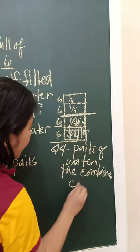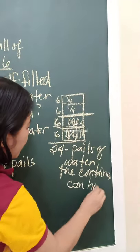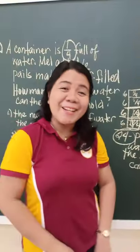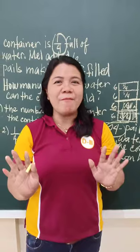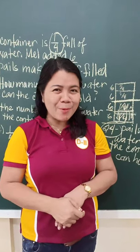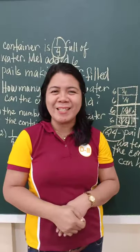So, label it twenty-four pails of water the container can hold. So, that is your final answer. I hope I have helped you here and everything is clear. Always remember, math is fun all the time. Bye!